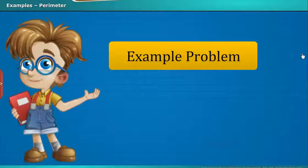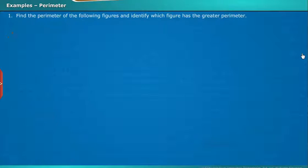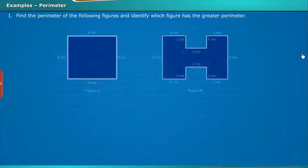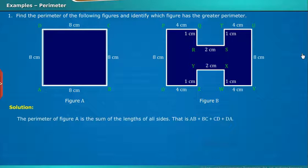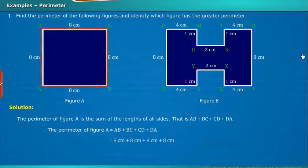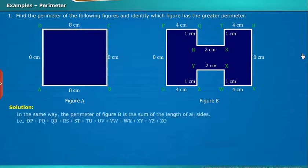Have a look at an example problem. Find the perimeter of the following figures and identify which figure has the greater perimeter. Let us solve it. The perimeter of figure A is the sum of the lengths of all sides, that is AB plus BC plus CD plus DA. Therefore, the perimeter of figure A equals 4 times 8 centimeters, which is equal to 32 centimeters.